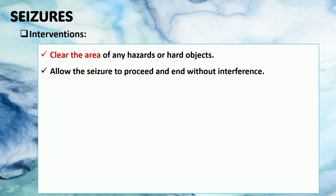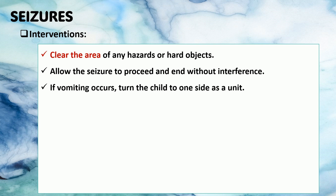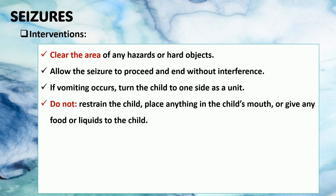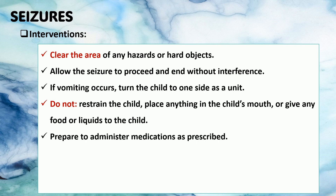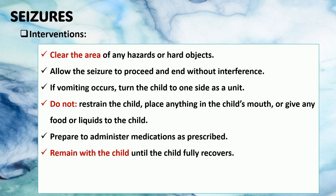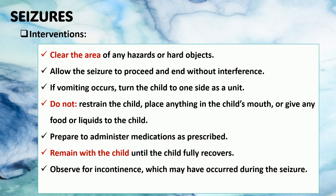Clear the area of any hazards or hard objects. Allow the seizure to proceed and end without interference. If vomiting occurs, turn the child to one side as a unit. Do not restrain the child. Do not place anything in the child's mouth or give any food or fluids to the child. Prepare to administer medications as prescribed. Remain with the child until the child fully recovers. Observe for incontinence, which may have occurred during the seizure. Finally, document the occurrence.